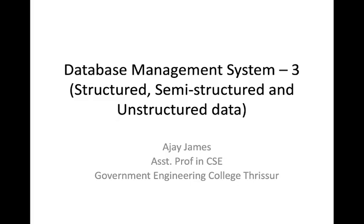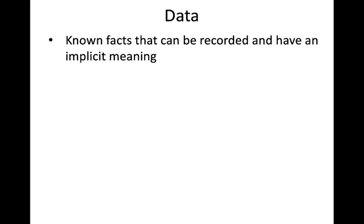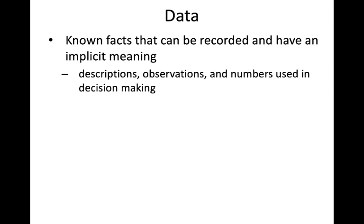In this lecture we will see about structured data, semi-structured data, and unstructured data. We have different kinds of data and we'll be seeing the differences between them. Data is something — known facts that can be recorded and have an implicit meaning. For example, your name, your address, your phone number — all these are data. It can be descriptions, observations, and numbers used in decision making.